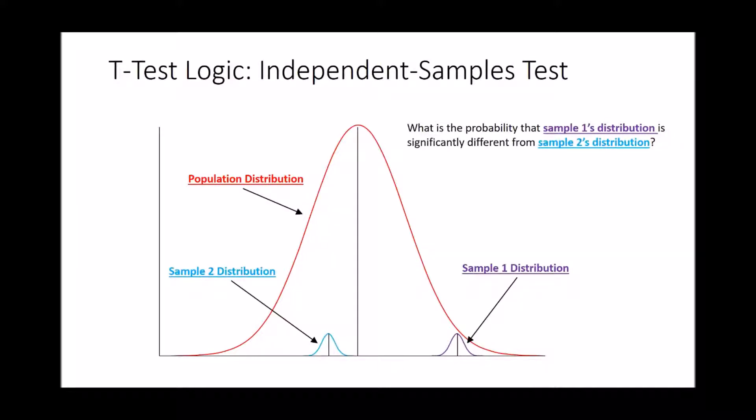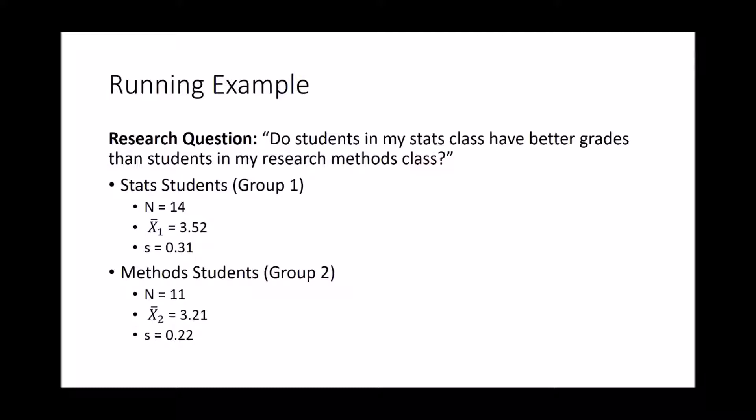The independent samples test, on the other hand, asks the question: what is the probability that sample one's distribution is significantly different than sample two's distribution? What we're doing is taking the mean and standard deviation of both sample one and sample two, and asking what's the probability that these are significantly different from each other. So let's jump into our running example.